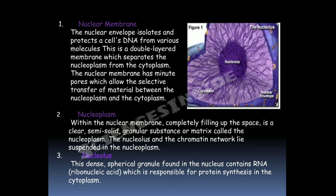The nuclear envelope isolates and protects the cell's DNA from various molecules. It is a double-layered membrane which separates the nucleoplasm from the cytoplasm. The nuclear membrane has minute pores which allow the selective transfer of material between nucleoplasm and cytoplasm. The fluid present inside the nucleus is called nucleoplasm, and the fluid present in the cell outside the nucleus is called cytoplasm.